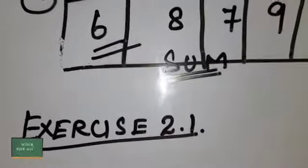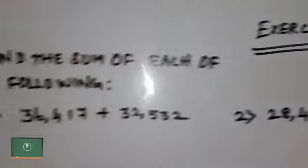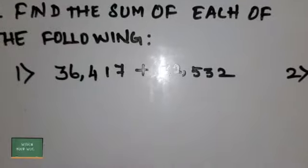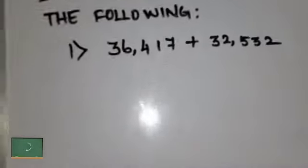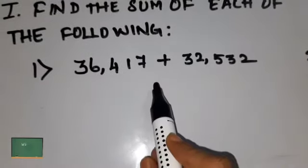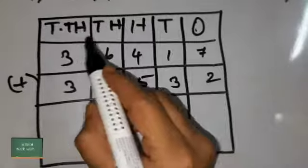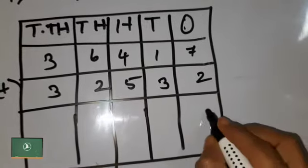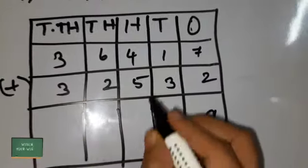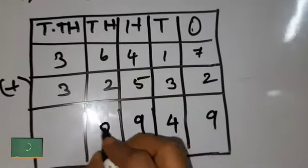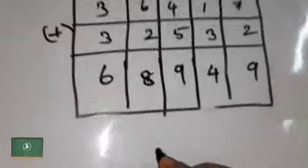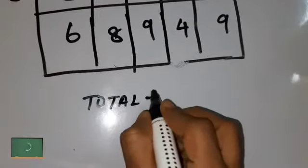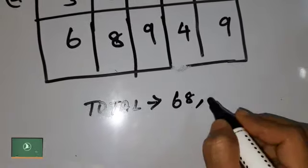Now let's solve Exercise 2.1. The first task is to find the sum of the following. The first question is 36,417 plus 32,532. We write them according to their place values: 7 plus 2 is 9; 3 plus 1 is 4; 4 plus 5 is 9; 6 plus 2 is 8; and 3 plus 3 is 6. So the total is 68,949.